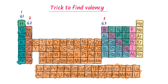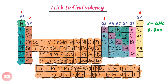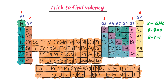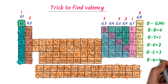On the other hand, we know that group 4, group 5, group 6, group 7 and group 8 elements are non-metals. To find the valency of non-metals, I subtract the group number from 8. For example, 8 minus 8 equals 0, so the valency of group 8 elements is 0. Secondly, 8 minus 7 equals 1, so the valency of group 7 elements is 1. Thirdly, 8 minus 6 equals 2, so the valency of group 6 elements is 2. Fourthly, 8 minus 5 equals 3, so the valency of group 5 elements is 3. Fifthly, 8 minus 4 equals 4, so the valency of group 4 elements is 4.